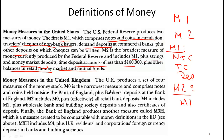Checks themselves are not part of money. If I write you a check for 20,000 and it's sitting in your wallet, that's not money — including it would be double counting, since the underlying deposit already exists in my account. When you deposit the check, money flows from my account to yours. The check in itself is not money and is not included in the definition.